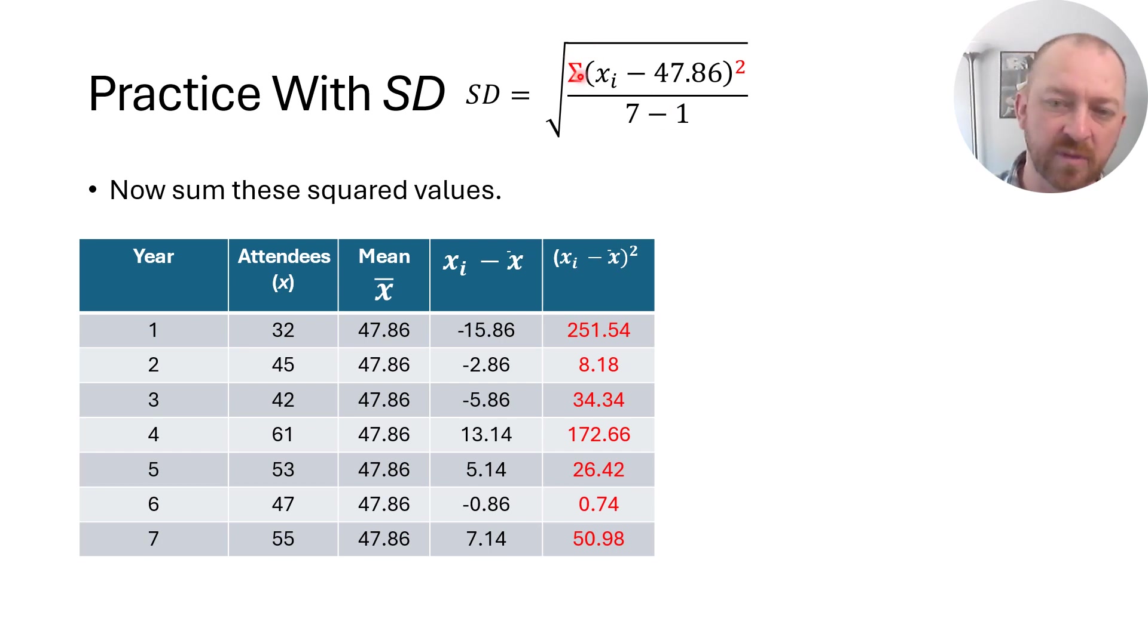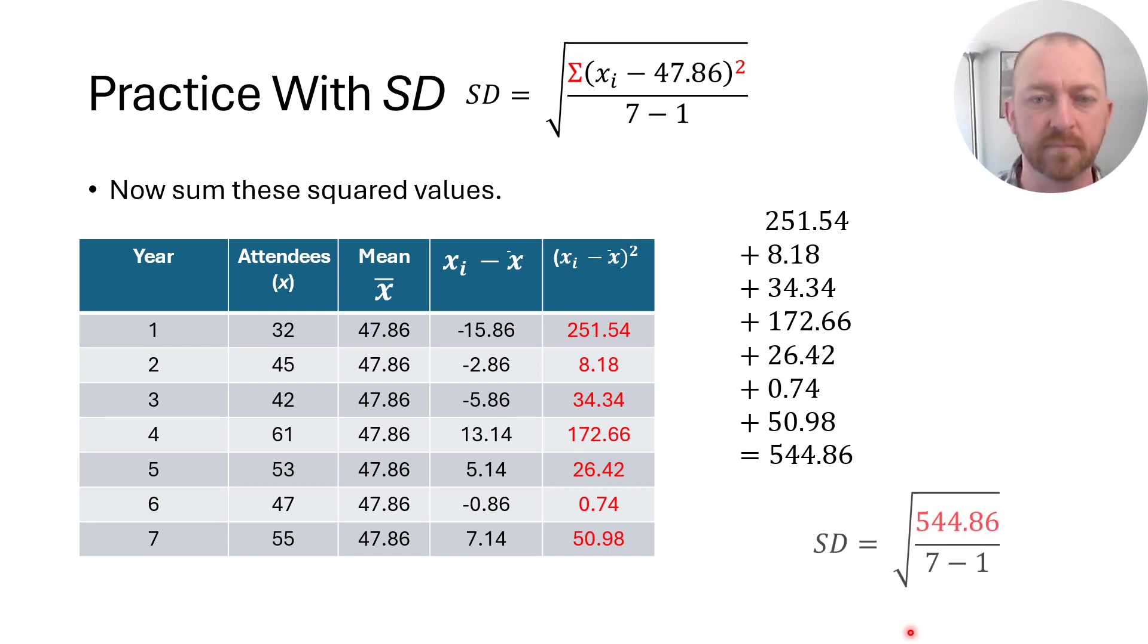Now, of course, the sigma symbol here says that we add up, we find the sum of all of those squared numbers. And it's important here that we've squared first before adding, because that's what the order of operations tells us to do. So you square the differences first, then you add up those differences, which is why we've done it here. So now we add up all of those values to get 251.54 plus 8.18 plus 34.34, and so on, gets us to a total of 544.86. Although once again, I've rounded ever so slightly. And so now we can take a look at here. And what we need to do is divide that 544.86 by 7 minus 1.